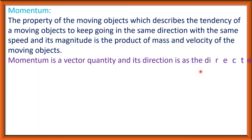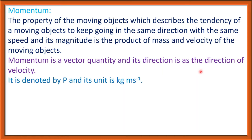Momentum is a vector quantity and its direction is the same as the direction of velocity. Velocity is a vector quantity and mass is a scalar quantity. Therefore momentum is also a vector quantity and its direction is as the direction of velocity. It is denoted by P and its unit is kilogram meter per second. The SI unit of mass is kilogram and SI unit of velocity is meter per second, so the unit of momentum is kilogram meter per second.